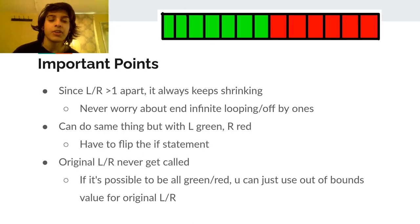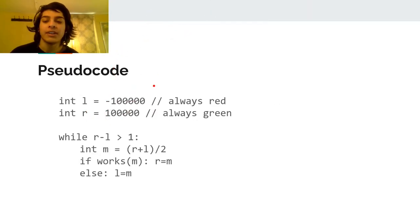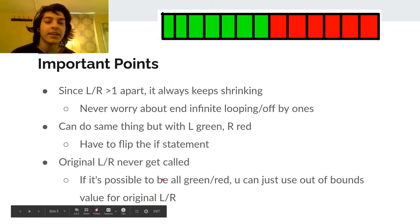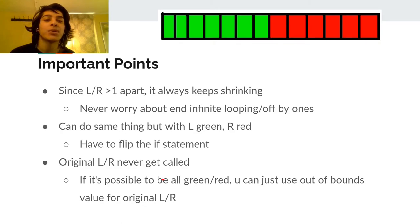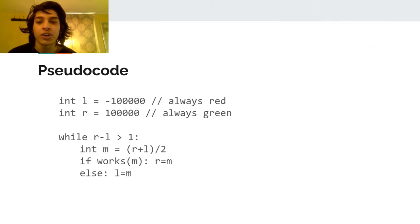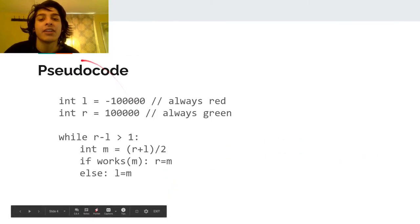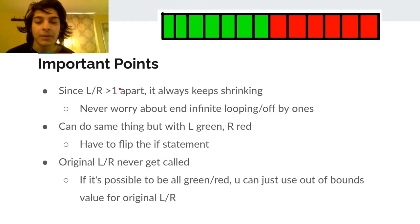An important point is that the original L and R values never get the predicate called on them. So in the edge case where it's possible for the predicate to always be green or always be red, that's OK. You can just pick some out-of-bounds value and use that for your original L or R, pretending it's in the required region, because the predicate will never actually be called on those original values.